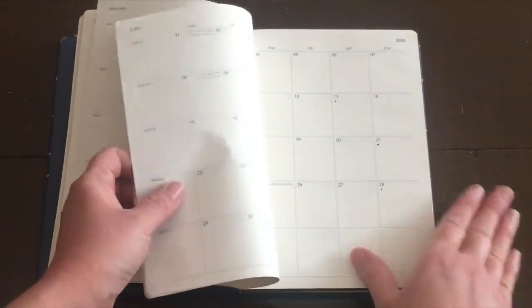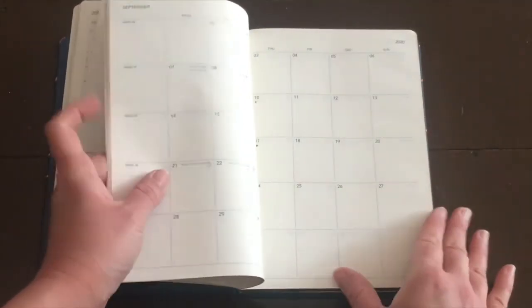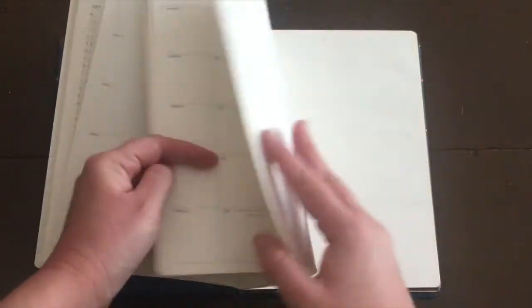Then we go into international holidays and straight into the year planner and then month at a glance. The month at a glance is really handy for when you want to just jot down appointments, things that aren't going to be like total day to day, hour by hour stuff. I just find it really easy to look through.